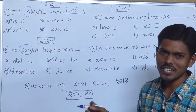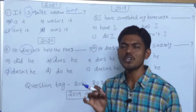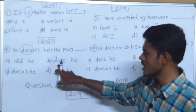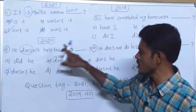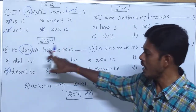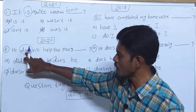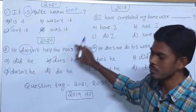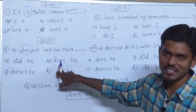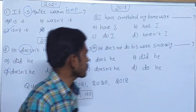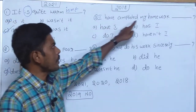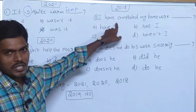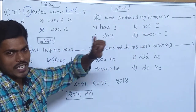If you listen carefully, it is very easy and you can get the answers easily and score marks. See how easy — it is negative, so select the positive and check the helping verb 'does.' Next one: 'I have completed my homework' — positive or negative? Positive, so we need a negative answer.